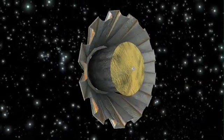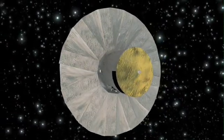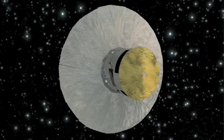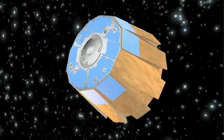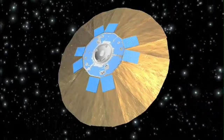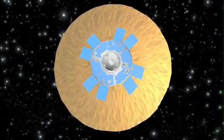To achieve the precise and accurate measurements that will be needed, the Gaia payload must remain mechanically and thermally ultra-stable. This is achieved by using a special ceramic material to construct the payload and by shielding the payload with a large sun shield that will be unfolded after launch.